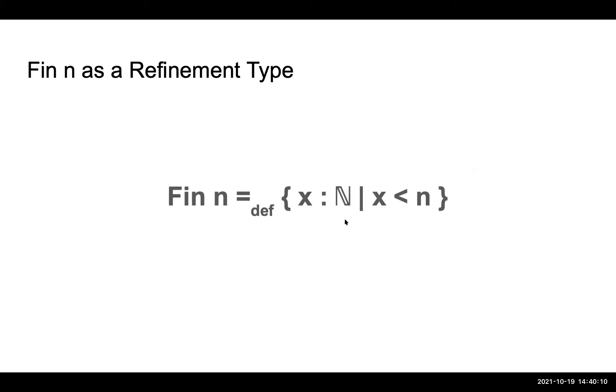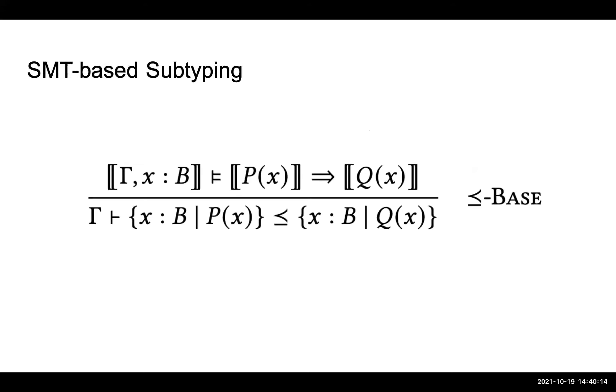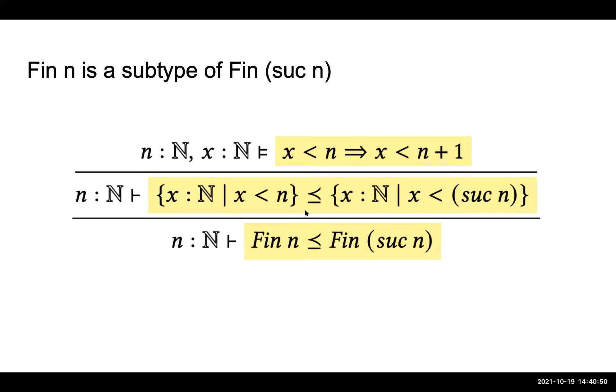And what makes refinement types particularly useful is that it supports SMT-based subtyping. So here, the subtyping rule says if you have two refinement types with the same base type, but one with refinement predicate P and another one with refinement predicate Q, the one with P is a subtype of the one with Q if P implies Q logically. And the nice thing about this is that this implication query can be discharged to an SMT solver. So we can automatically check this subtyping relation. So coming back to our previous example, what we want to check is Fin n is a subtype of Fin succ n. So we can build a subtyping derivation like this. So all you need to show is just for all natural number x and n, if x is less than n then x is also less than n plus one, that can be easily solved by an SMT solver.